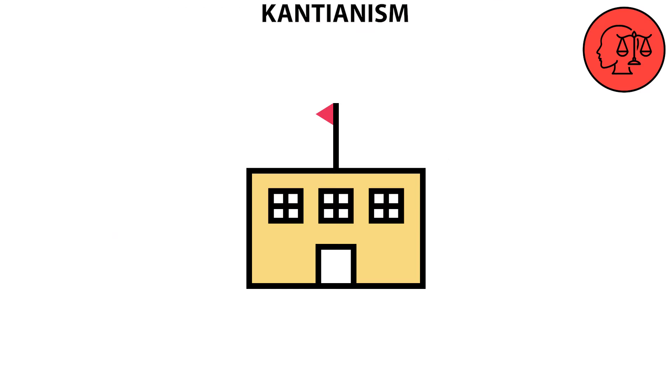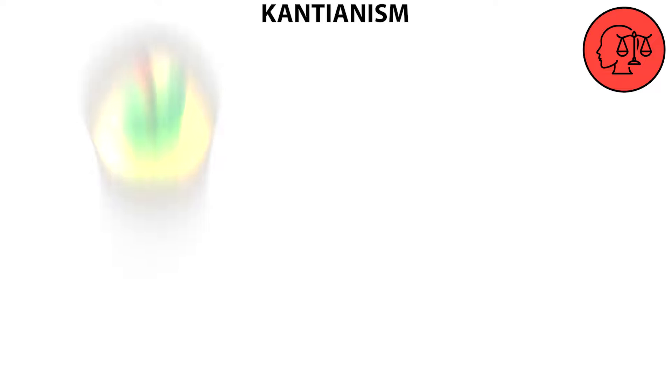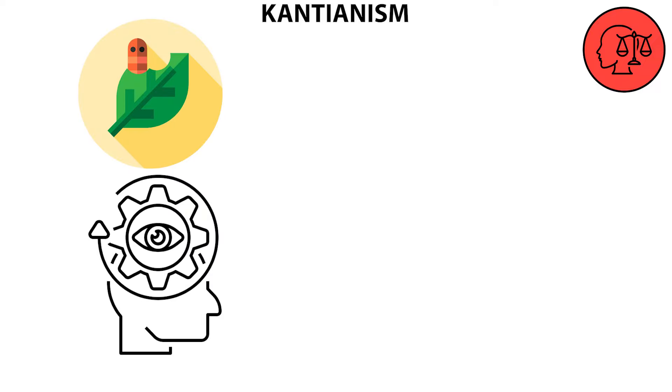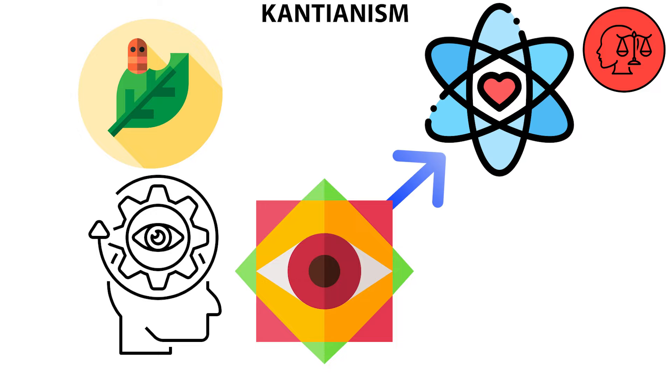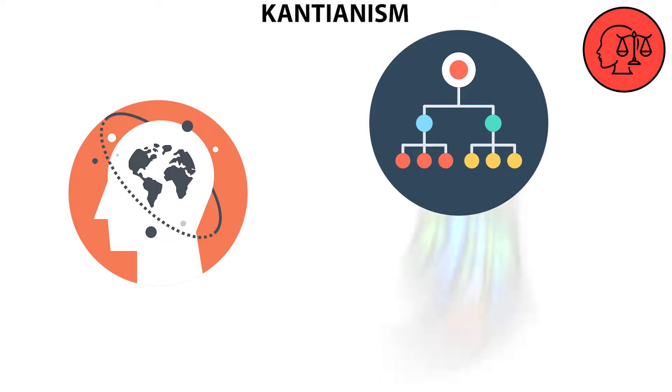Kantianism is a philosophical school of thought that originated from the writings of the 18th century philosopher, Immanuel Kant. It's a system that explores the nature and limits of human knowledge, aiming to elevate philosophy to the level of a science. At its core, Kantianism is concerned with the principles of knowledge and morality. It emphasizes the role of the mind in structuring our experiences and understanding of the world.